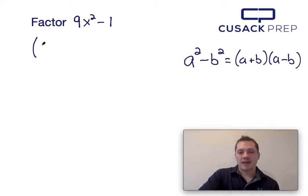So if I were to factor this, the square root of 9x squared is 3x, which gives me my value of a, and the square root of 1 is 1, which gives me my value of b.